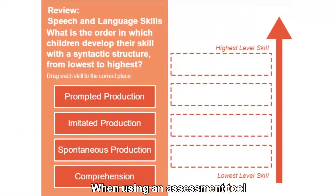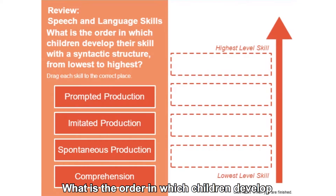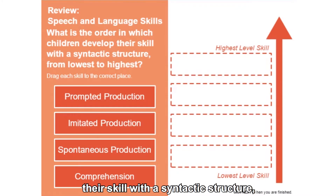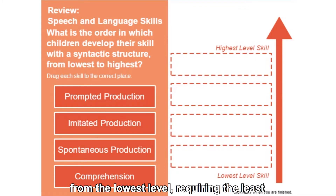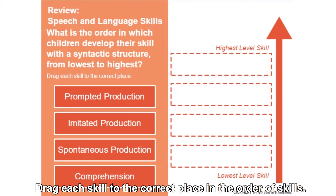When using an assessment tool like the TAGS rating system, consider the level of skill the child is required to use. What is the order in which children develop their skill with the syntactic structure, from the lowest level requiring the least student responsibility to the highest level? Drag each skill to the correct place in the order of skills.